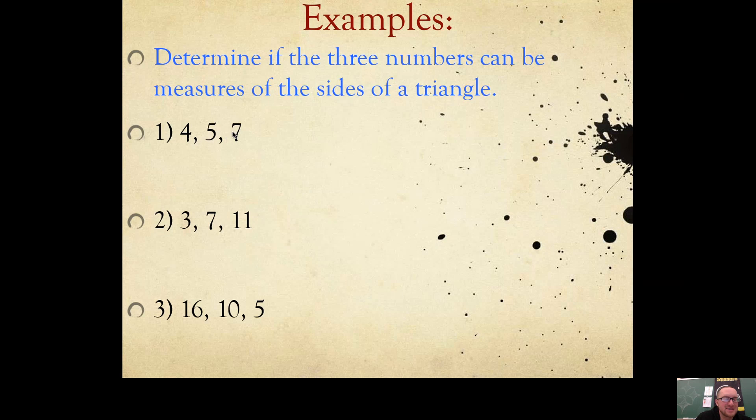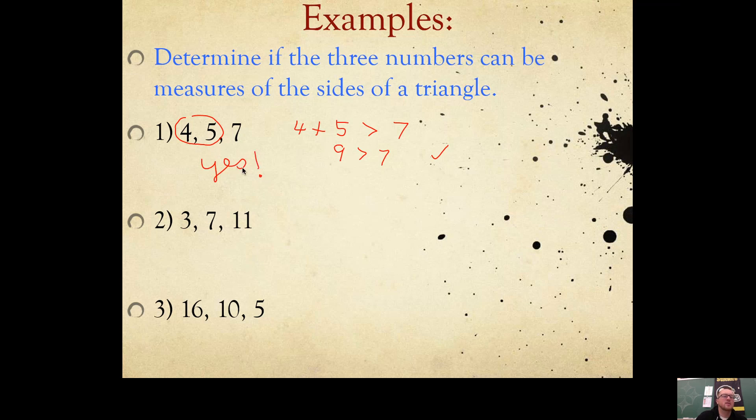4, 5, and 7. Could you make a triangle with side lengths 4, 5, and 7? Is it possible? Well, you need to take your two smallest sides and add them together. And then compare that with the biggest side. Is 4 plus 5 bigger than 7? It is. You can make a triangle with those side lengths. This triangle exists with side lengths 4, 5, and 7.